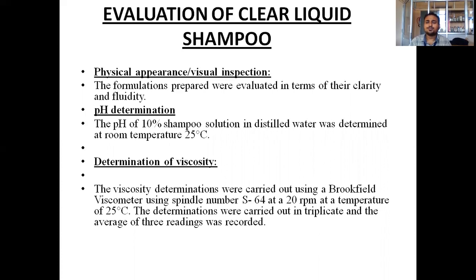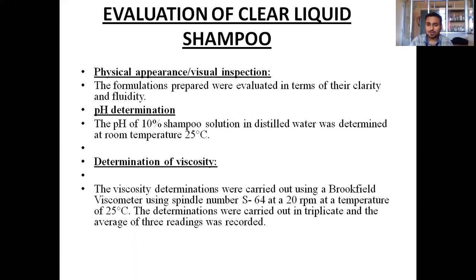The viscosity is determined with the help of a viscometer using spindle number 64 at 20 RPM and a temperature of 25 degrees Celsius. The determination is carried out by taking the sample three times — that means we take three viscosity readings and calculate the average. The average result is the main value used in the discussion.